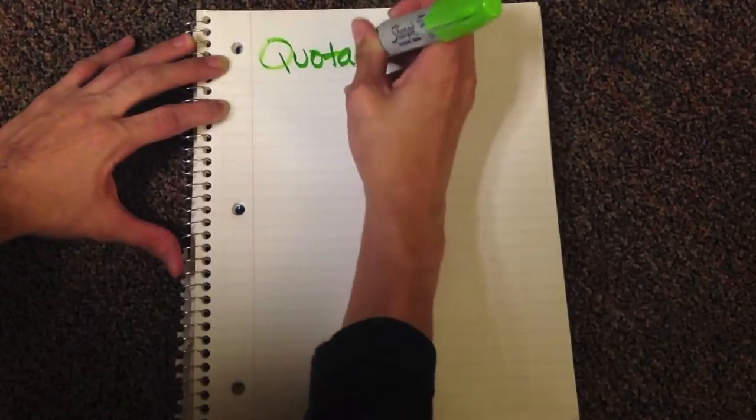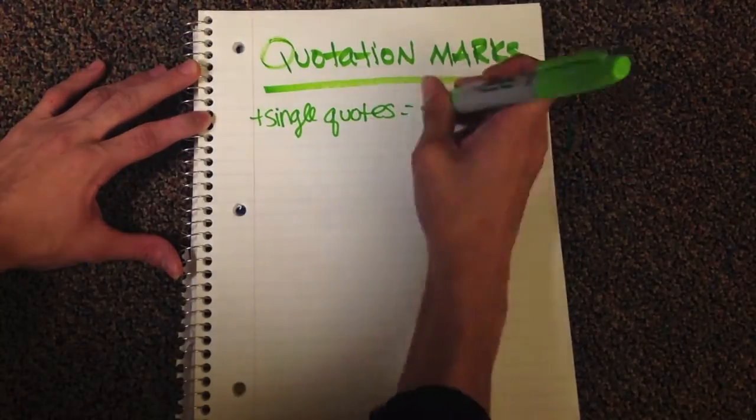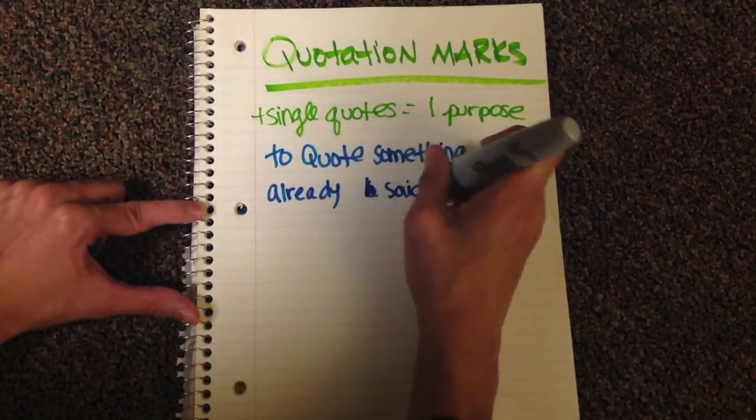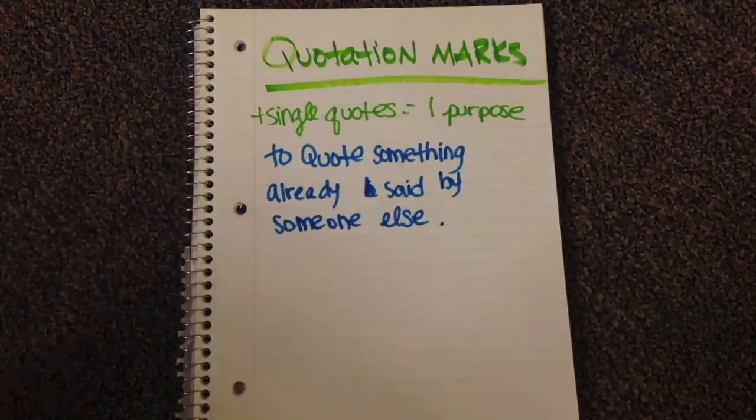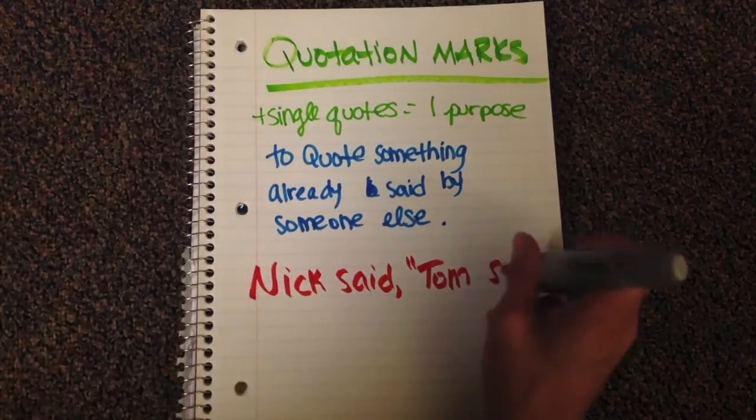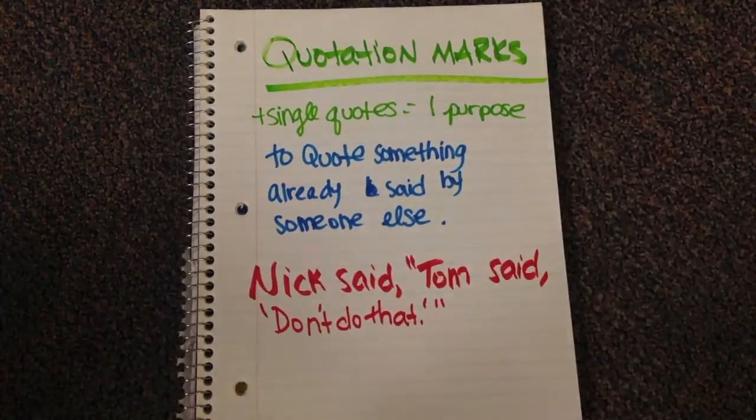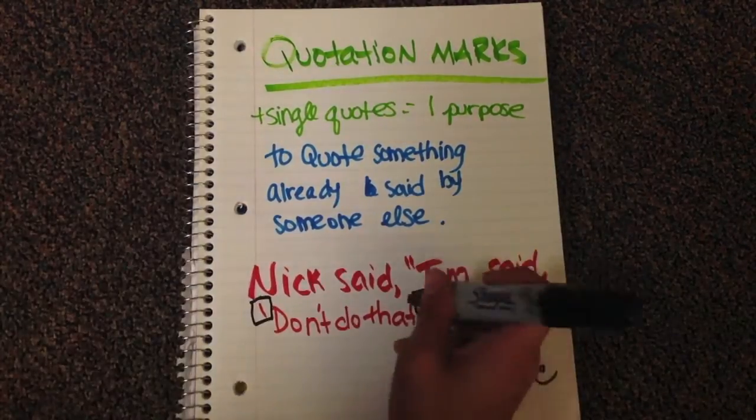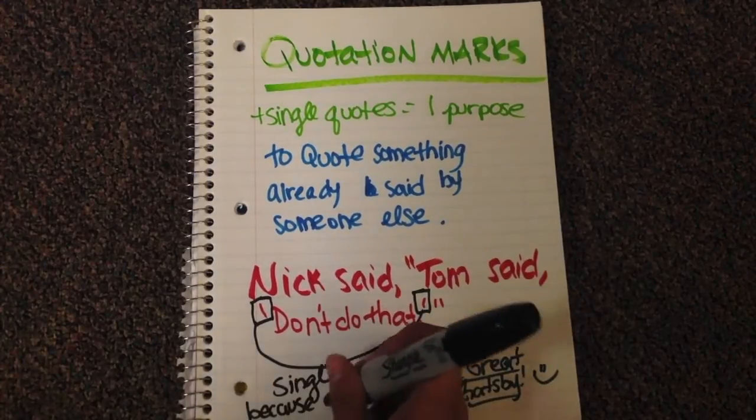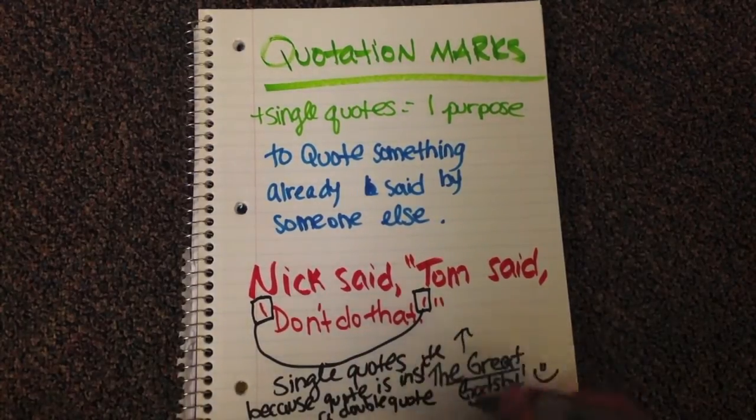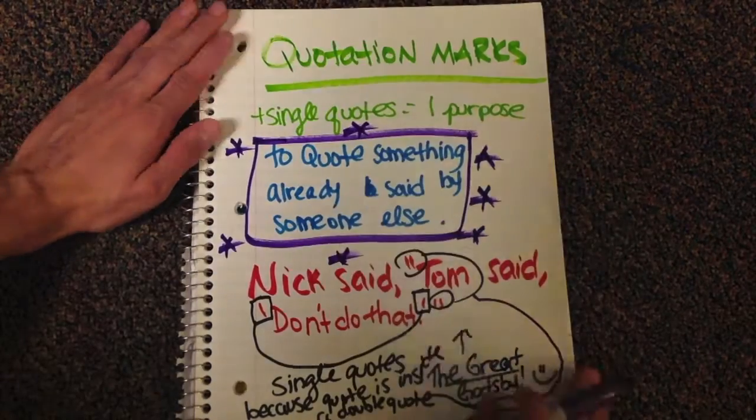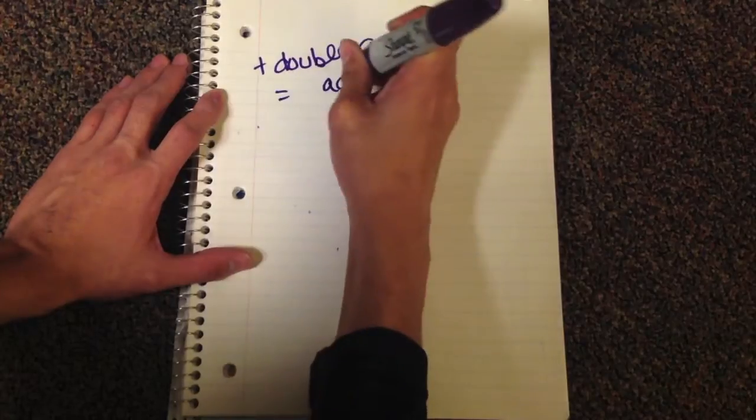So, since we've just spent the past six minutes ragging on the fact that you can't use a single quote in place of a comma, let's actually talk about a single and double quote. When do you use each? Single quotes, you only use for one thing, and that is to quote someone else who is quoting something. So if I have the sentence, Nick said, Tom said, don't do that. Don't do that is in single quotes. Tom said, don't do that, is all in double quotes, if that makes sense. The visual will help. But point is, single quotes are only for quoting someone quoting someone. When you're using a double quote, it's just someone who, it's just the actual quote.